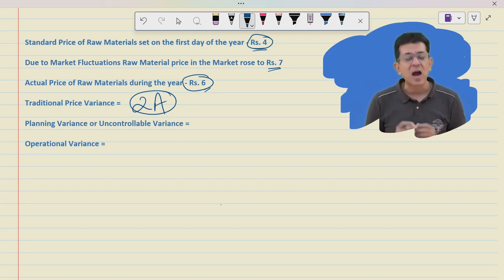This is also called traditional way of calculation of variance. Now think, are you correct in holding the purchase manager responsible for paying 2 rupees extra? I don't think so. Because this standard that was set was actually faulty.